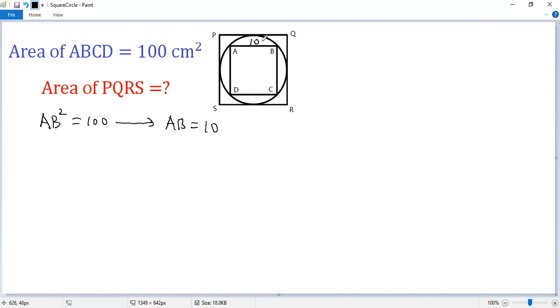So that side is 10, BC also is 10. So we can calculate the diagonal AC using Pythagorean theorem. AC squared equals AB squared plus BC squared. So we get 10 squared plus 10 squared, 100 plus 100, so 200.